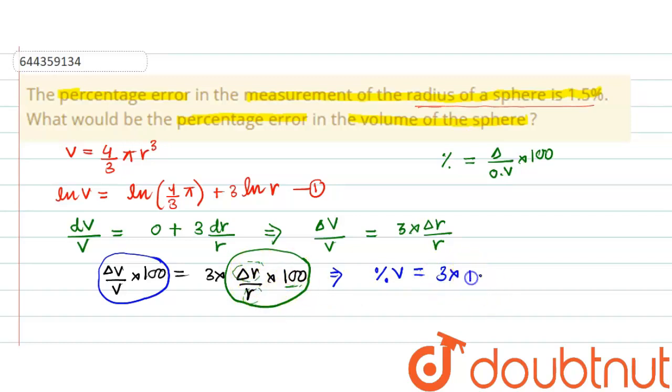that is 3 × 1.5, so this comes out to be equals to 4.5%. So this is our final answer. Thank you.